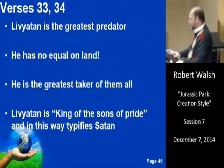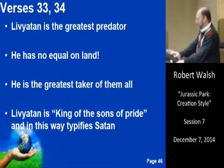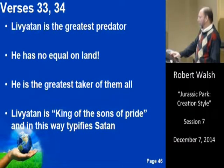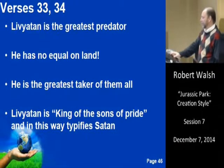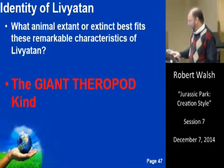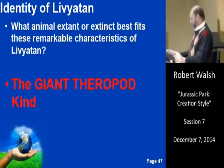Leviathan is the greatest predator, with no equal on land — the greatest taker of them all. Leviathan is the king of the sons of pride, and in this way he typifies Satan. It's interesting that Satan is referred to as a seven-headed dragon — the ultimate Leviathan. So what animal, extant or extinct, best fits these remarkable characteristics? The great and giant theropod kind.